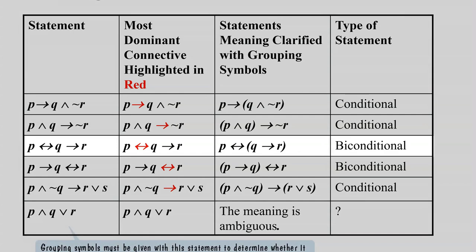For biconditional and conditional, the biconditional statement is more dominant than the conditional statement. So you group the statements on the same side of the biconditional. For example, 'P if and only if Q then R' is the same as 'P if and only if (Q then R).' In another example, you group 'P then Q' together, and then apply the biconditional.